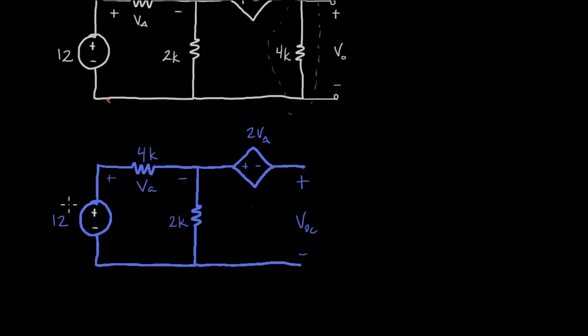Which means that this voltage source, which is driving a current, is driving it only through this loop. So that means that we can solve for VA by doing voltage division here. Recognizing that all the current is flowing here, and all the current is flowing through there. So voltage division will tell us that VA equals 12 times 4 over 6, which is 2 thirds. So that equals 8 volts.